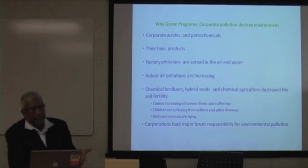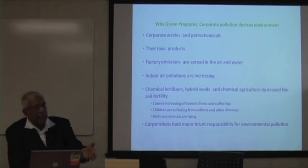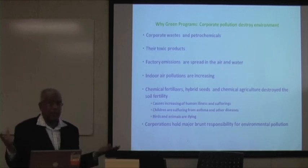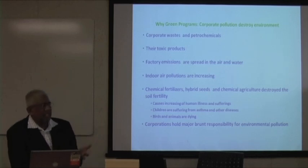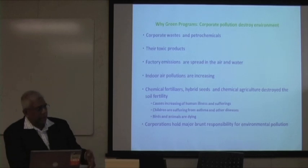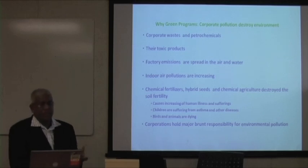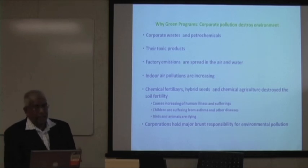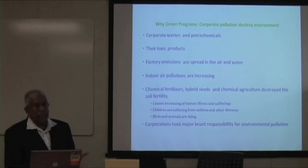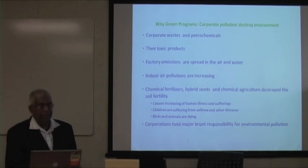These wastes go into the land, the water, and the whole water becomes polluted. They produce a lot of toxic products, which are channeled into rivers, lakes, ponds, and canyons. Factory emissions are spread in the air and water. Indoor air pollution is increasing. Chemical fertilizers, hybrid seeds, and chemicals are destroying soil fertility. This causes increasing human illness and suffering. Children are suffering from asthma and other diseases, and birds and animals are dying.